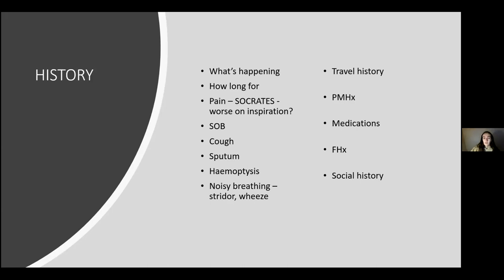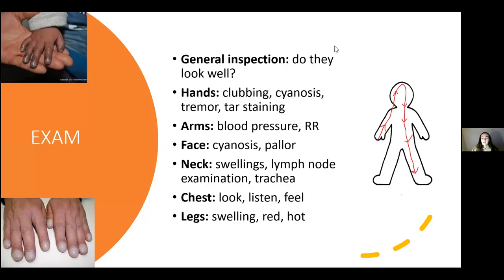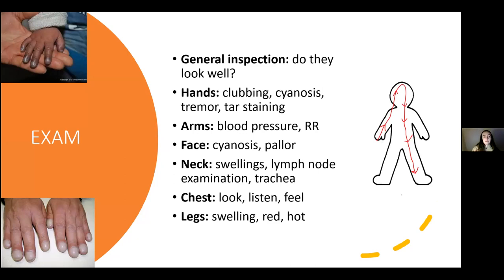On to the examination. I've drawn a little person here to remind you to have a method. Mine is: hands, all the way up the arms to the face, down the neck, and down the body. Start with general inspection — do they look well? Look at the hands: any clubbing, cyanosis, tremor, tar staining? Does anyone know any causes of a tremor related to respiratory emergencies?